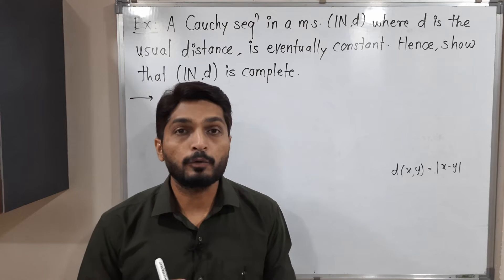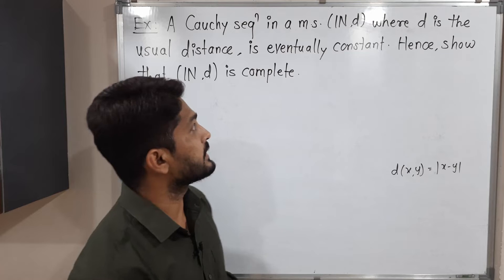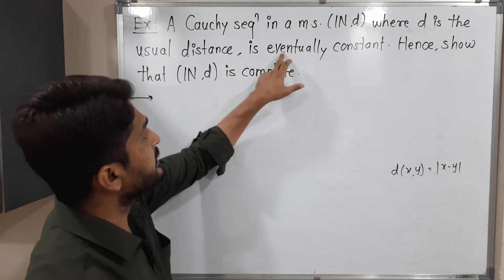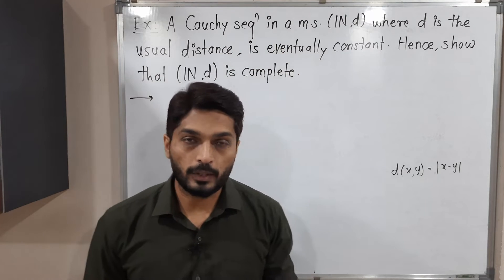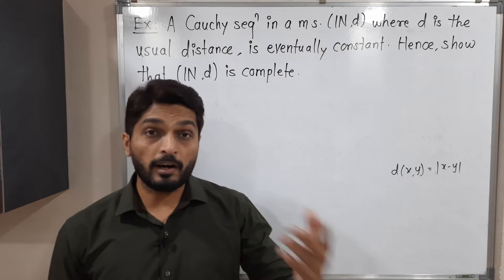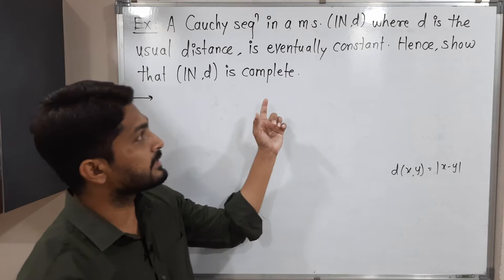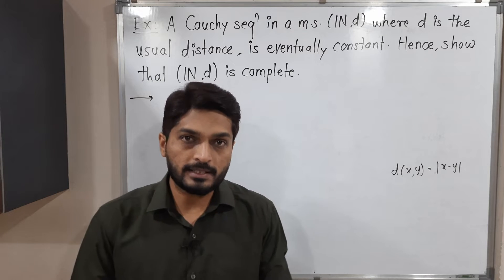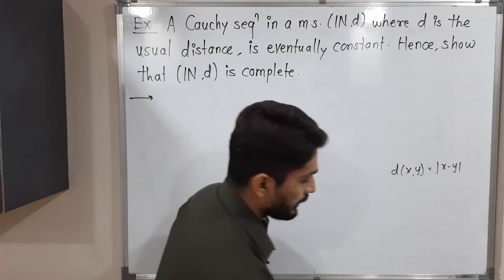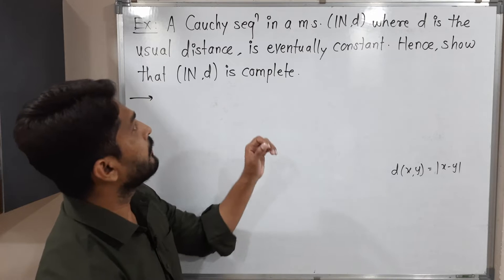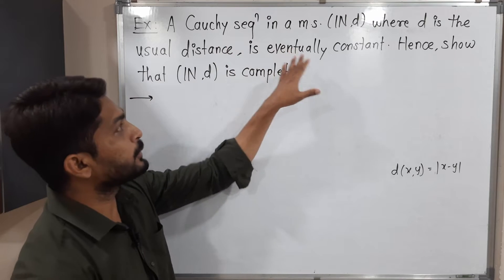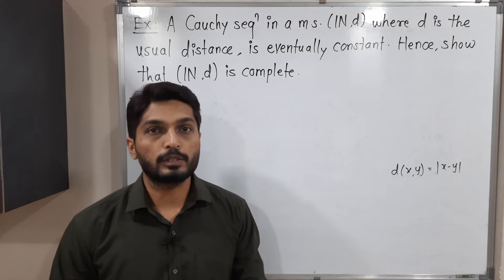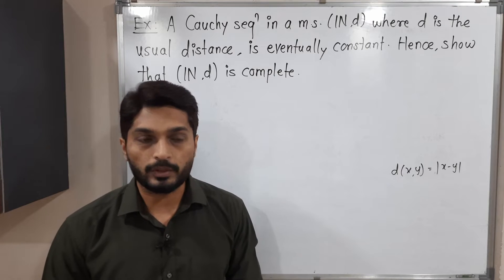In this metric space we have to prove two things. First, every Cauchy sequence is eventually constant. After that, using this result, we have to prove N, D is a complete metric space. So let us start to prove the first part. We have a Cauchy sequence and we have to prove that it is eventually constant.